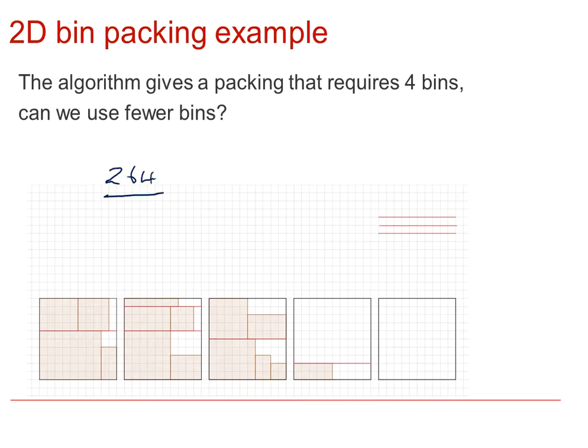And the lower bound would be, if we counted it all up, 264 divided by 100, which would indicate that we might be able to get away with as few as three bins. And by inspection, we can see that the item in bin four will fit into bin three, and thus, we only need three bins if we were able to put in a level there.